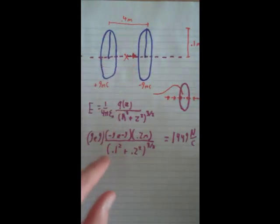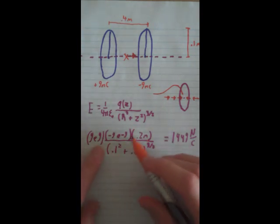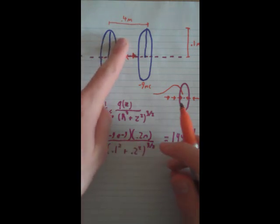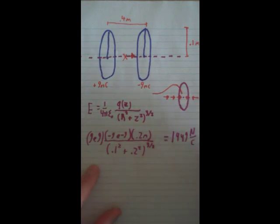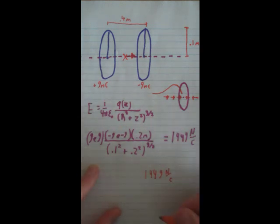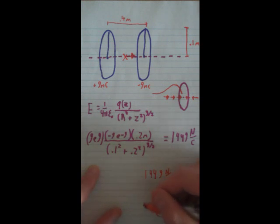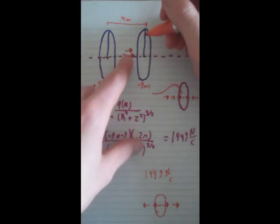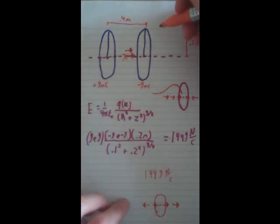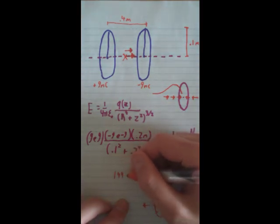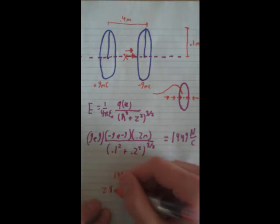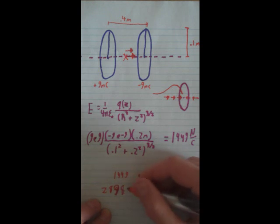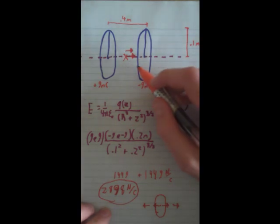Now let's find the field for the positive loop. Since basically everything is the same except the sign of the charge — the radius is the same, the distance is the same, the charge magnitude is the same — this is also going to be 1449 newtons per coulomb. For a positive ring, the field points outward instead of inward, so it also points in the same direction along the axis as the negative loop's contribution. Since we have two electric fields both pointing in the same direction, each with magnitude 1449 N/C, we add them together and get 2898 newtons per coulomb. That's how you figure out the electric field at the middle of two rings.